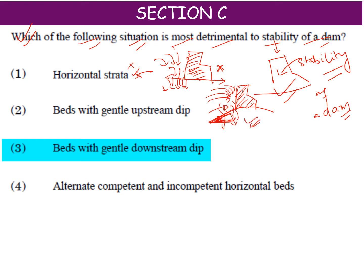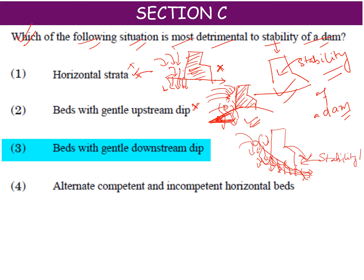This will also not be your answer. Now if you consider beds with gentle downstream dip, the slope goes downstream and you have made a dam. If water comes and is stored there, it will definitely take the soil with it. It will remove the bedding layer beneath the dam, so the dam will become destabilized and will collapse.